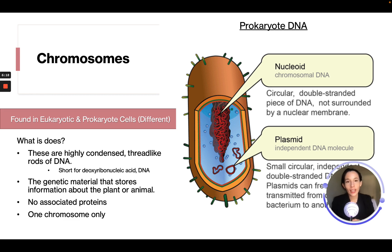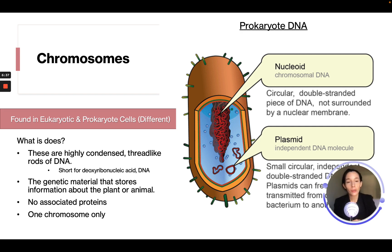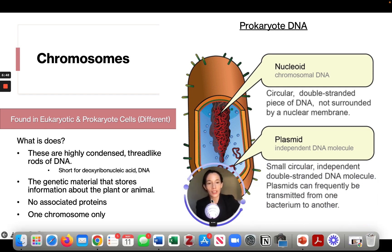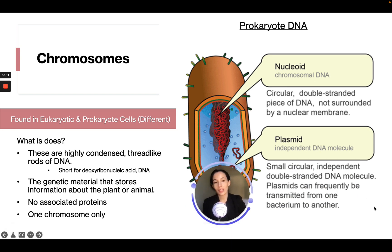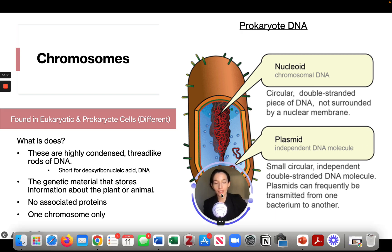In prokaryotes, the chromosomal DNA is called the nucleoid — circular double-stranded pieces of DNA not surrounded by a nuclear membrane, floating in the center of the cell. Prokaryotes also have plasmids, which are small circular independent double-stranded DNA molecules that can frequently be transmitted from one bacterium to another.